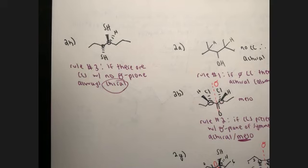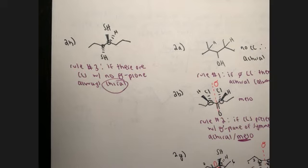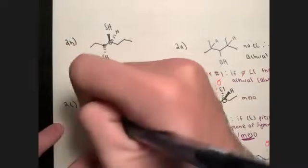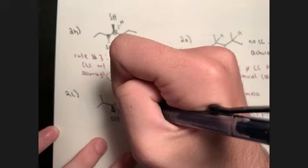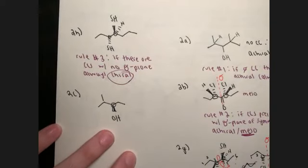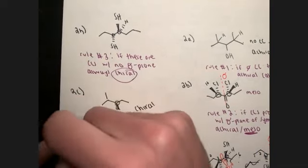Student question: if a molecule has a sigma plane of symmetry, does that automatically make it achiral? Yes — if you see symmetry and there's a chiral center present, or even no chiral centers, it would be achiral. Example 2c has one chiral center and no plane of symmetry: Rule 3 — chiral. No thinking needed.